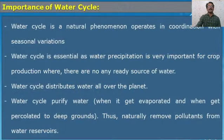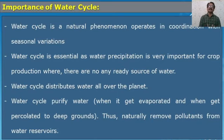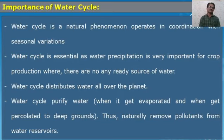The water cycle is very essential because it is a natural phenomenon that operates in coordination with seasonal variation. Water precipitation is very important for crop production — where there is no ready source of water such as bore wells, precipitation must be there, otherwise crops cannot grow to full bloom. The water cycle also distributes water all over the planet and purifies water — when water evaporates and percolates into deep ground, it gets purified, naturally removing pollutants from water reservoirs.